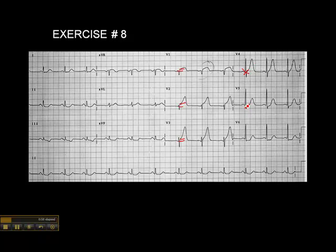There's no ST elevation in V5 and no ST elevation in V6 — just a little bit of ST depression. Technically, the criteria for an anterior wall MI is ST elevation in V3 and V4. Because we don't see it in V4, we can't say this is an anterior wall MI. All we can say is that this is a septal MI.